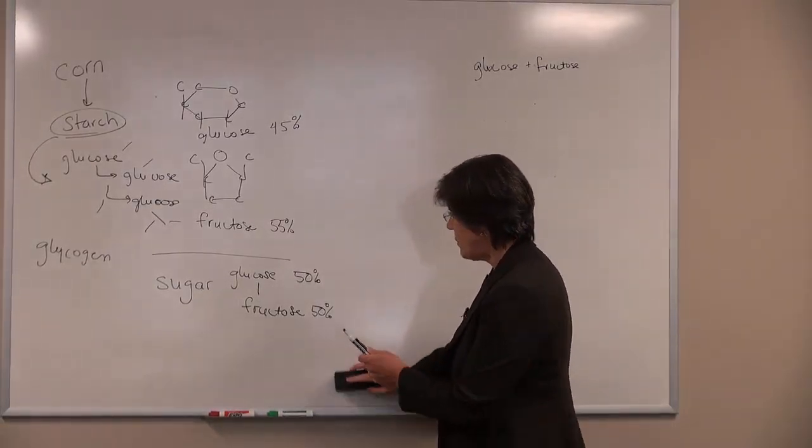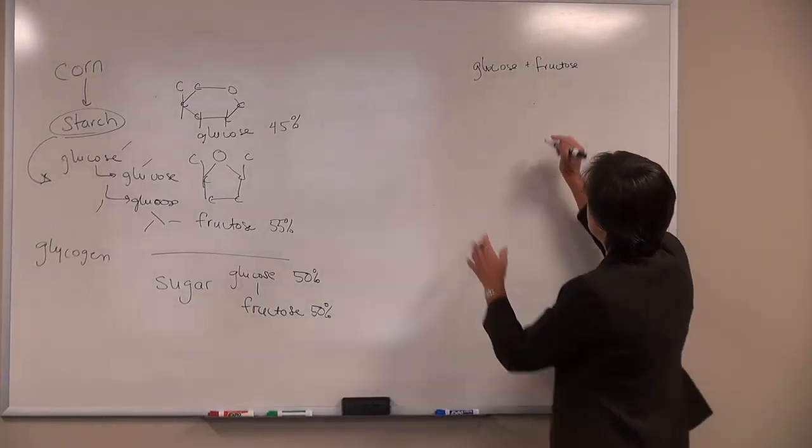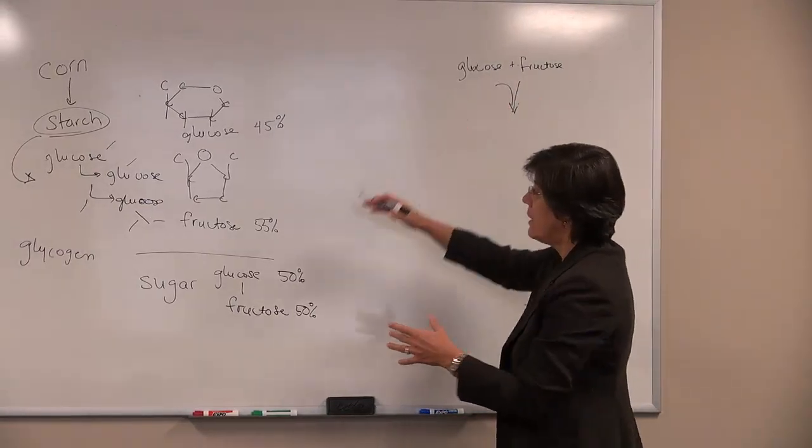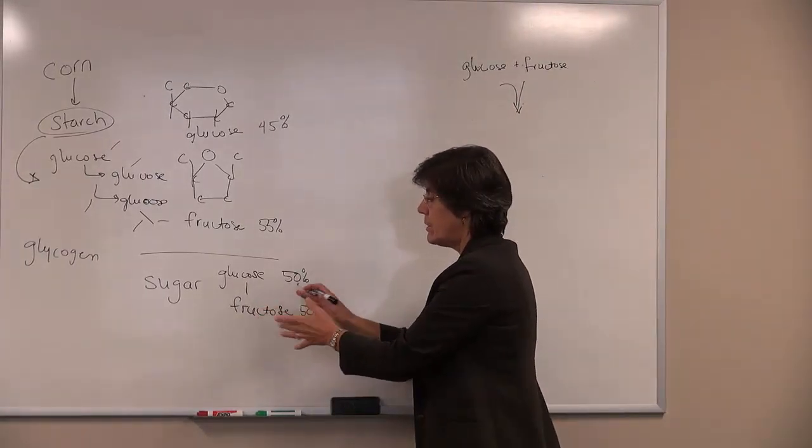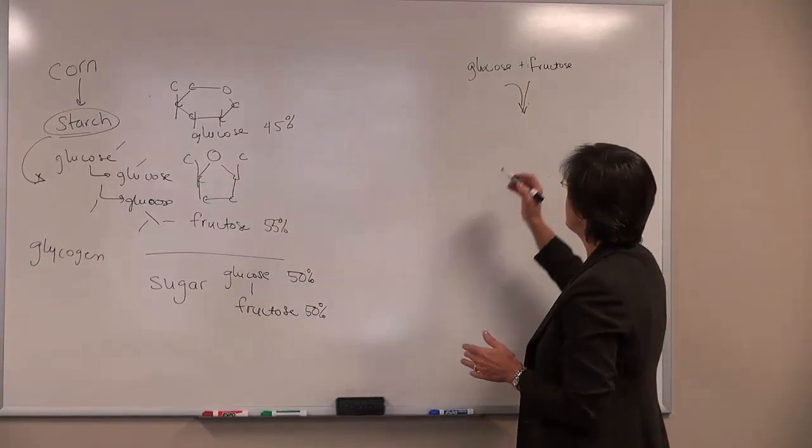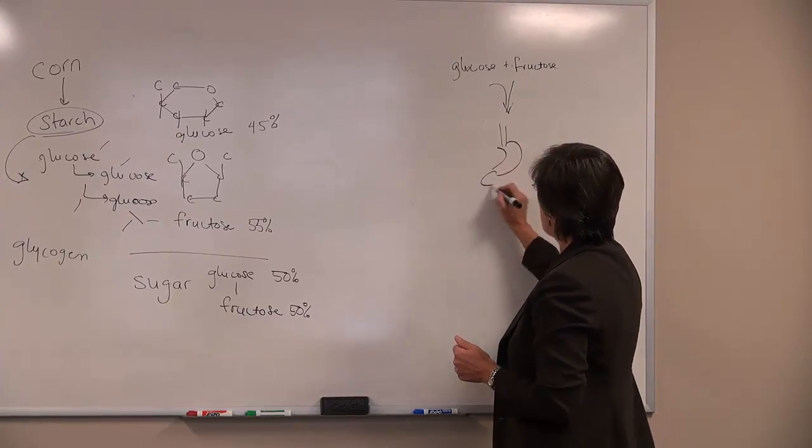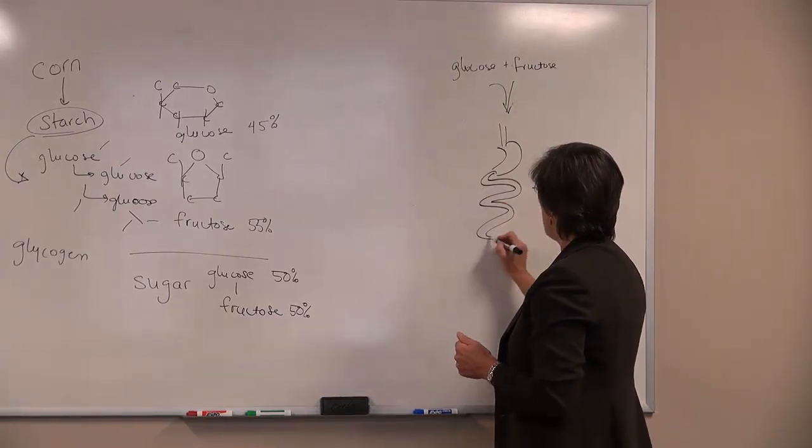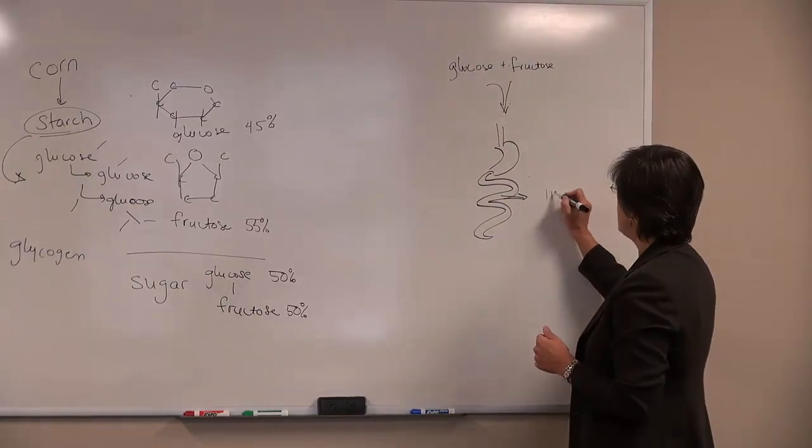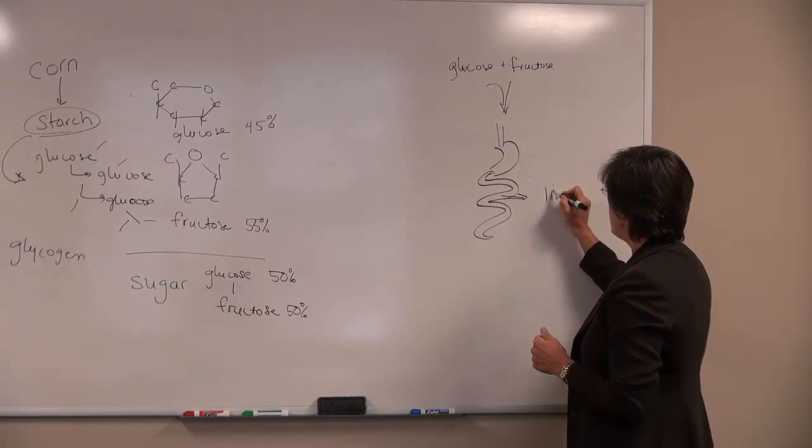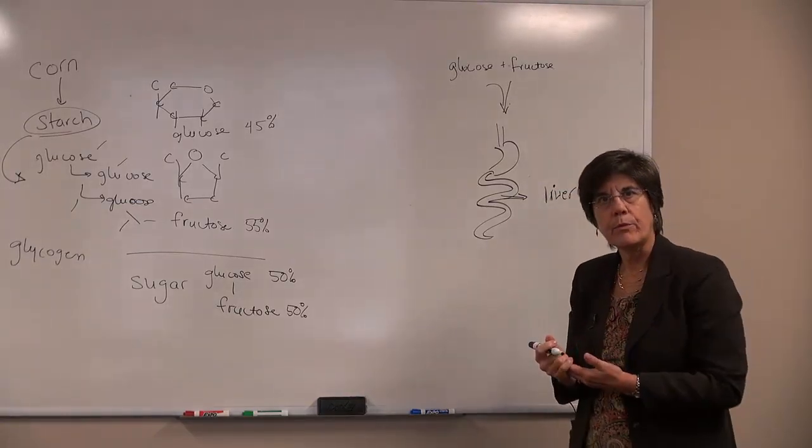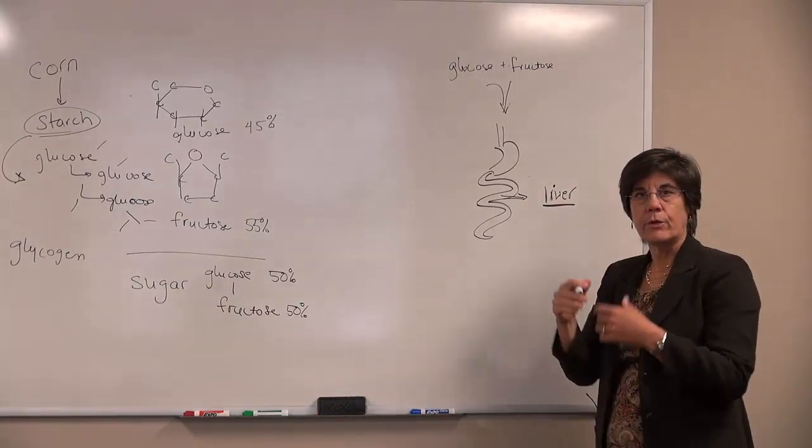So when we look at what happens to glucose and fructose when we eat it, when we consume these compounds, whether they be linked together in the fructose and glucose bonds in sugar or whether they be part of high fructose corn syrup, they enter into our digestive tract and are absorbed across the intestine and go mainly to the liver. So most of the carbohydrate, or actually all of the carbohydrate that we absorb from our diet, will stop by the liver first.